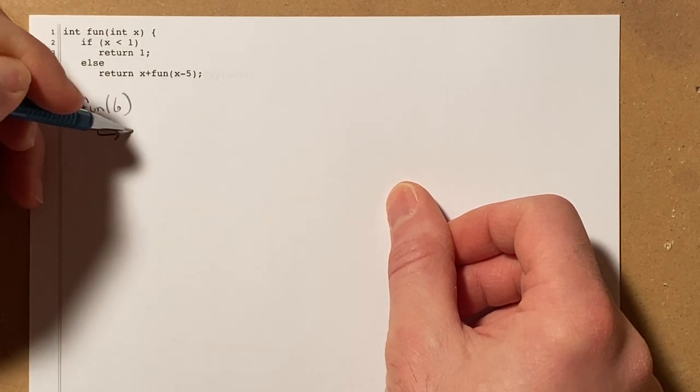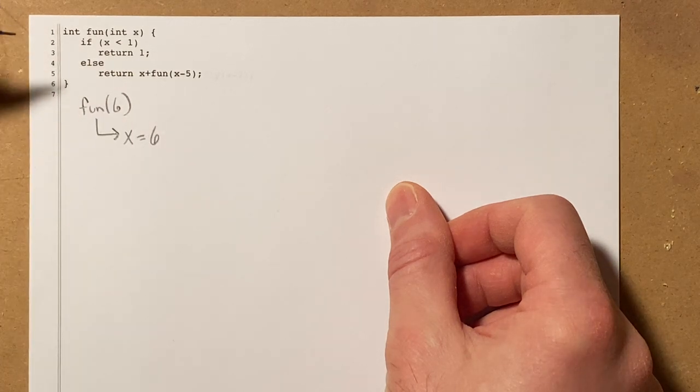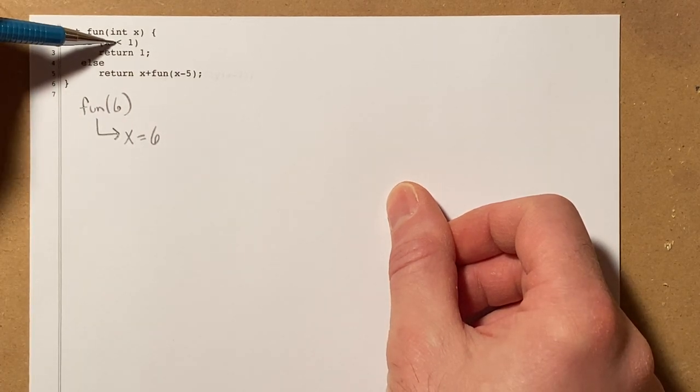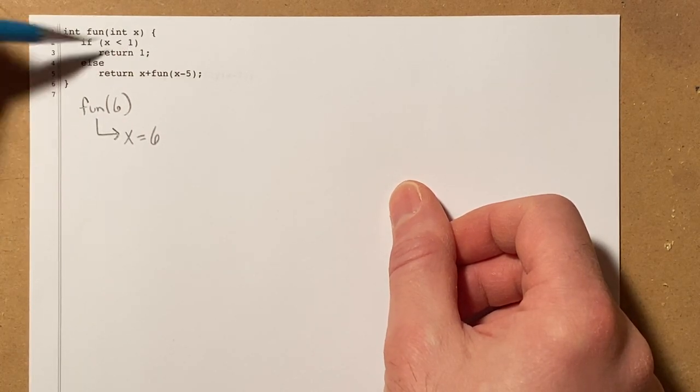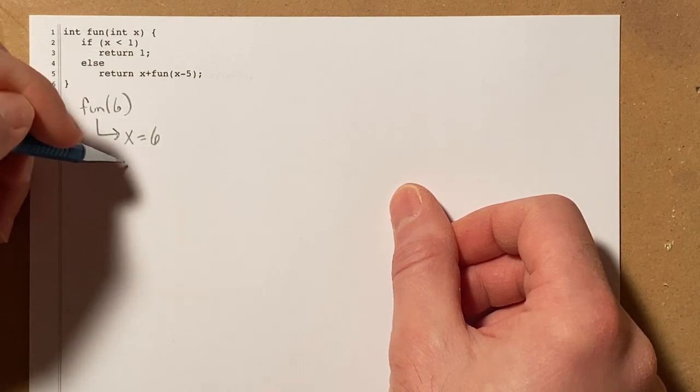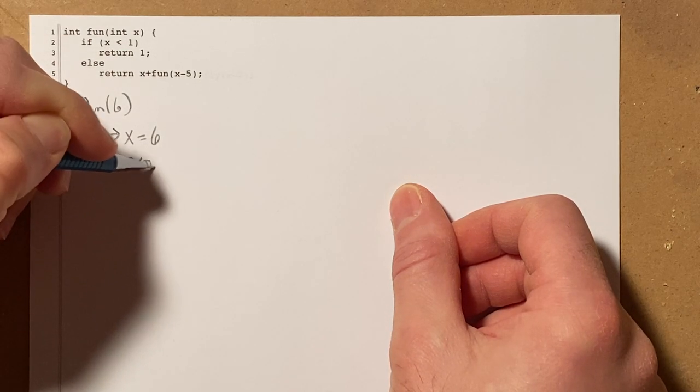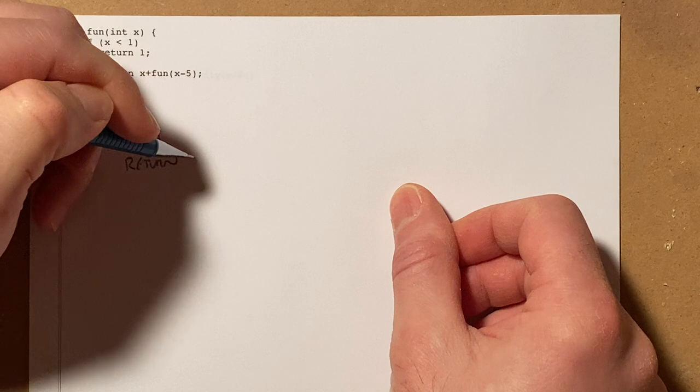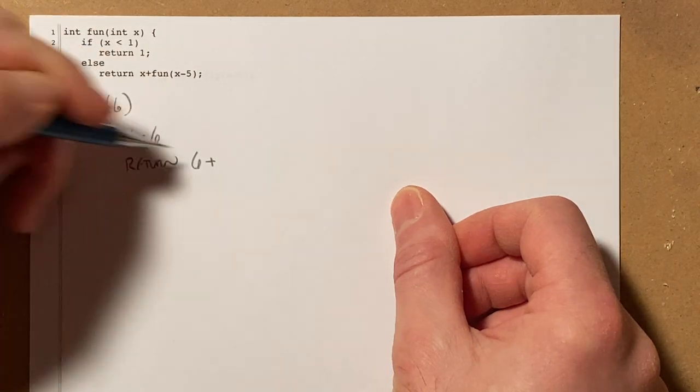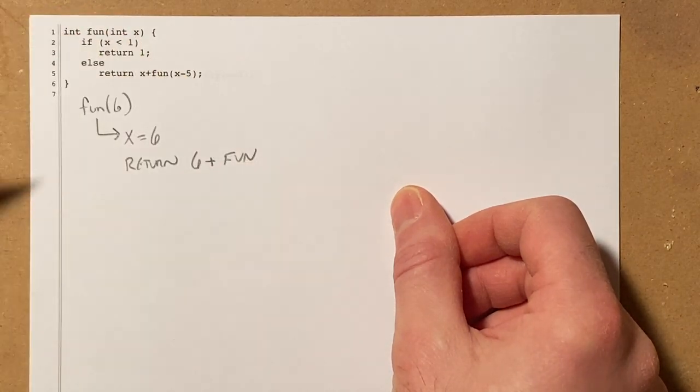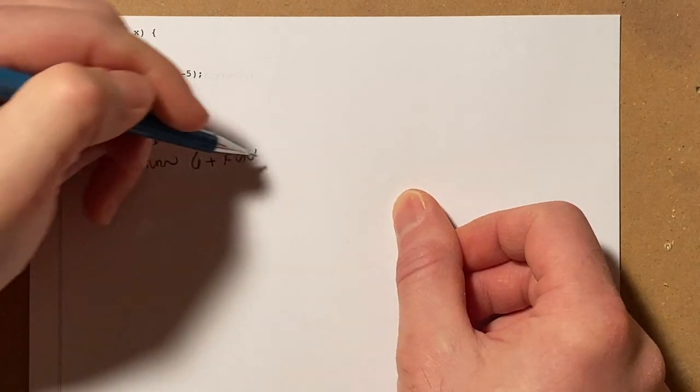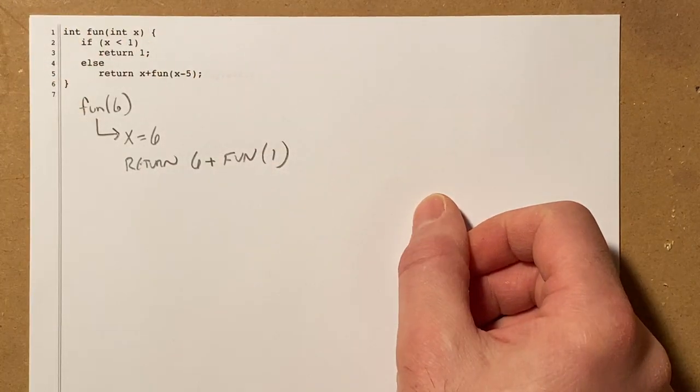So I'm going to write down that x equals 6 and I'll say if 6 is less than 1, it is not, that's false, else return. So I'm going to actually write return here, return x which is 6 plus fun of x minus 5. 6 minus 5 is 1, so I'll say fun of 1.